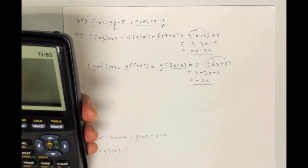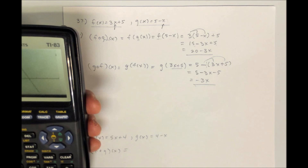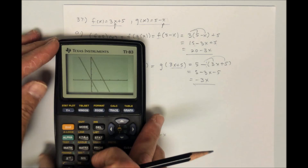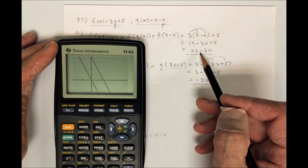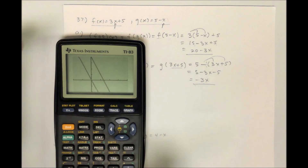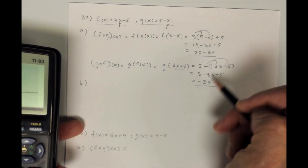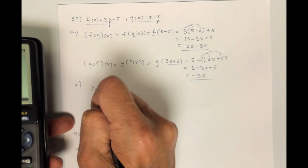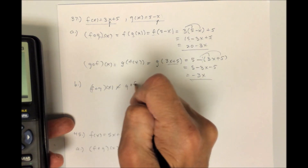Now let's try the graph — here we go. There's one and there's the other one. This one here has the y-intercept way up at 20, and this is the one that goes through the origin. So you can see not only are the functions different, the graphs are different. F circle g of x does not equal g circle f of x.